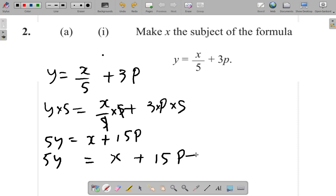So I subtract 15p, 15p minus itself. On the right-hand side, I have x alone equal. But then, over to the left, I must subtract 15p from the left as well.